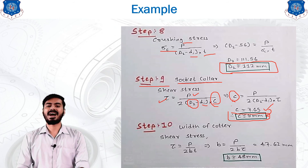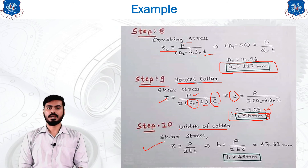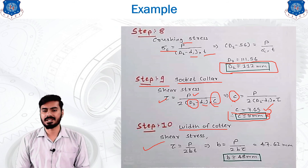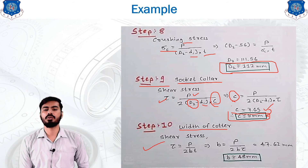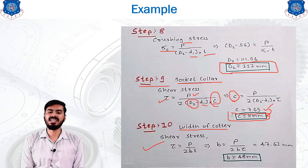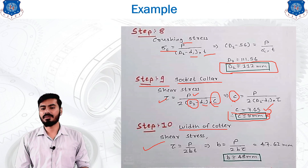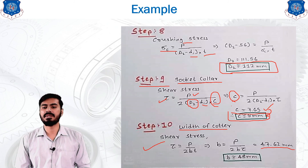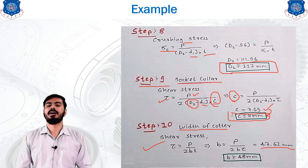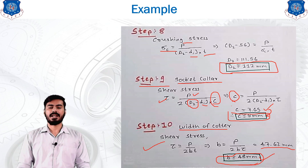The last step is the width of the cotter, calculated using the shear stress equation: τ = P / (2 · b · t). We have the values of P, t, and τ. Calculating gives b = 47.62 mm, rounded to 48 mm. So b = 48 mm is the final answer, completing the example.